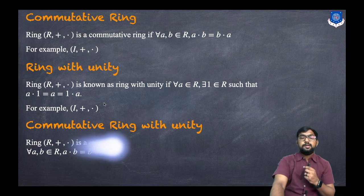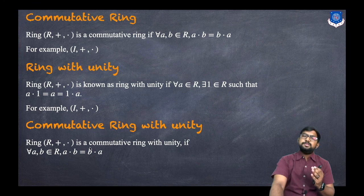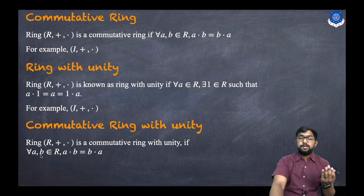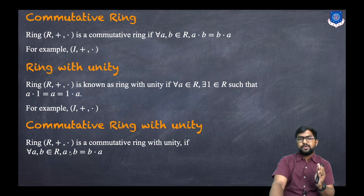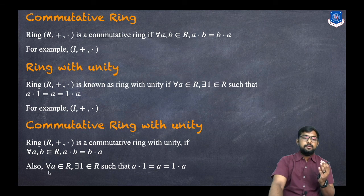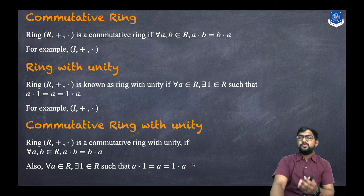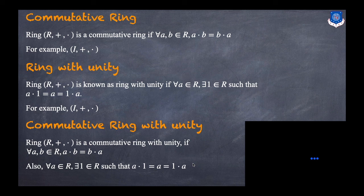A commutative ring with unity is the combination of both. The ring (R, +, ·) is a commutative ring with unity if: for every A, B in R, A·B = B·A, and there exists 1 in R such that A·1 = A = 1·A. So it is both commutative and has unity.